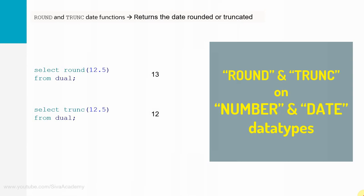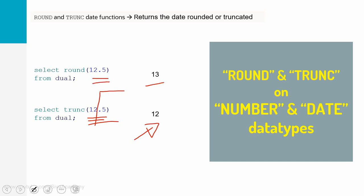The very basic difference between ROUND and TRUNC is: TRUNC will do the truncation — it will not do any rounding — whereas ROUND will do the rounding. For example, if the input is 12.5, TRUNC will just cut whatever is after the decimal portion and give the output as 12. Whereas ROUND will check what is the next value after the decimal point. If it is greater than or equal to 5, it will round up. Since it is 12.5, it rounds to 13. However, even if the input is 12.999, TRUNC will output 12 only. This is the very basic difference between ROUND and TRUNC.